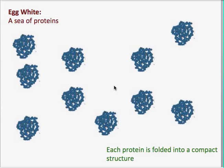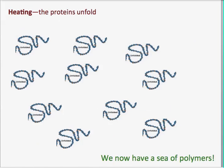What we argued today is that it happens because an egg is filled with a sea of protein. This shows you the proteins that are present in egg white. And what happens is that when you heat the proteins up, they unfold.